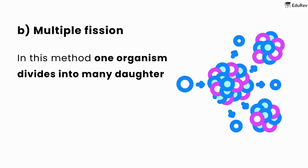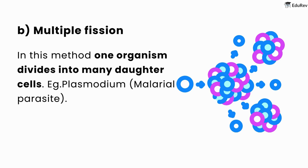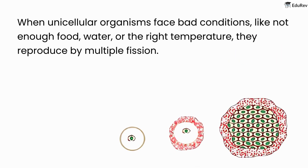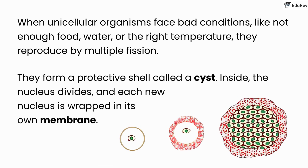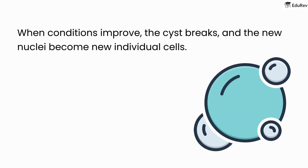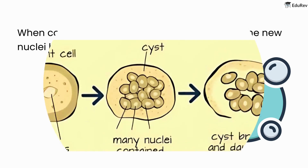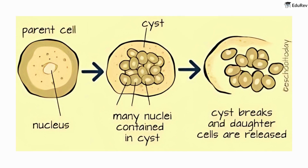In multiple fission, one organism divides into many daughter cells. An example is plasmodium, the malarial parasite. When unicellular organisms face bad conditions like not enough food, water, or the right temperature, they reproduce by multiple fission. They form a protective shell called a cyst. Inside, the nucleus divides and each new nucleus is wrapped in its own membrane. When conditions improve, the cyst breaks and the new nuclei become new individual cells. Here is a pictorial representation of multiple fission.